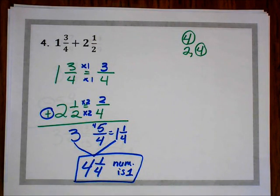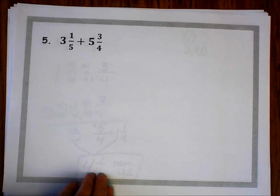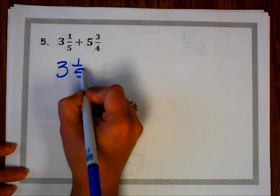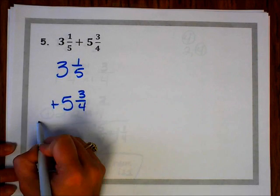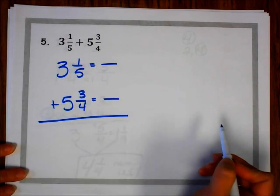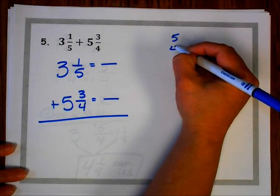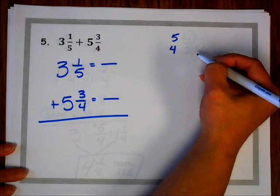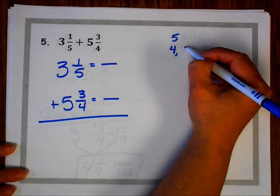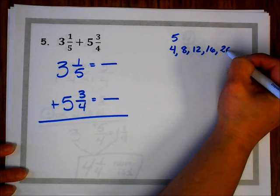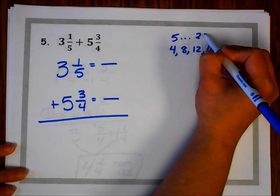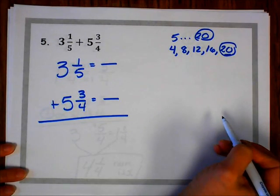Let's try another problem: number 5. I have 3 and 1 fifth plus 5 and 3 fourths. Notice I do not have a common denominator, so I'm going to have to find one. I'm going to count by 5s and count by 4s. I know all multiples of 5 end in a 5 or a 0, so I'll start with 4: 4, 8, 12, 16, 20. I'm at a number that ends in 0, and 5 times 4 gives me 20. So my lowest common denominator is 20.